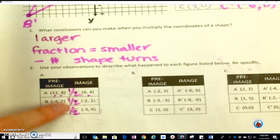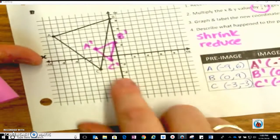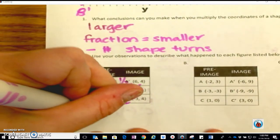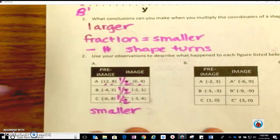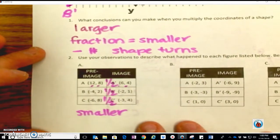If I'm multiplying by 1/2 or dividing by 2 based on example B, that must mean that my pre-image was getting smaller. So it reduced its size.